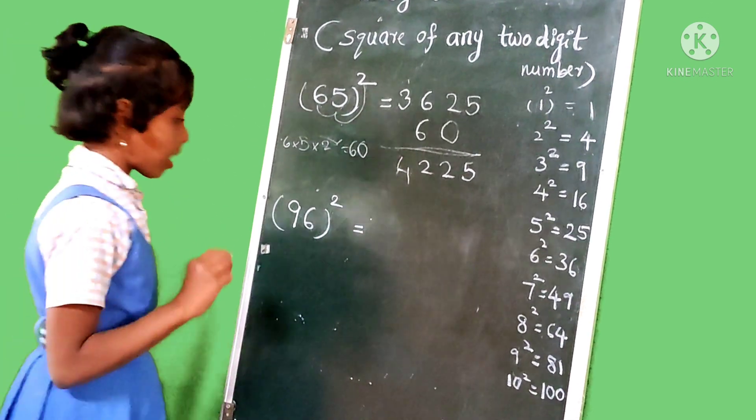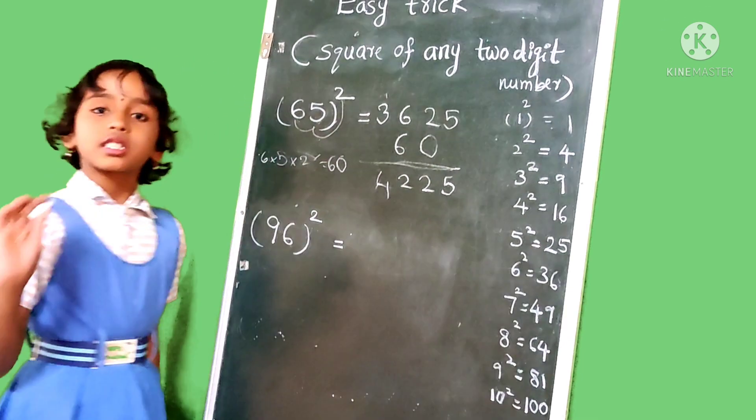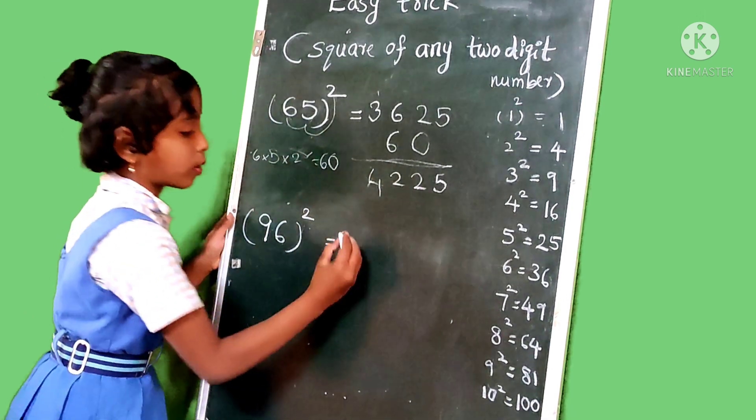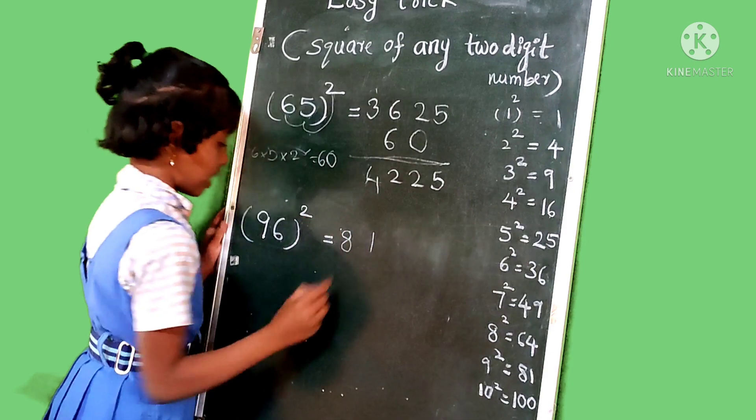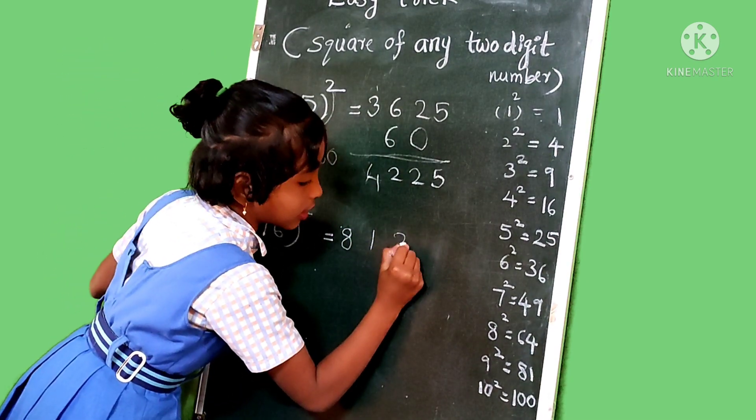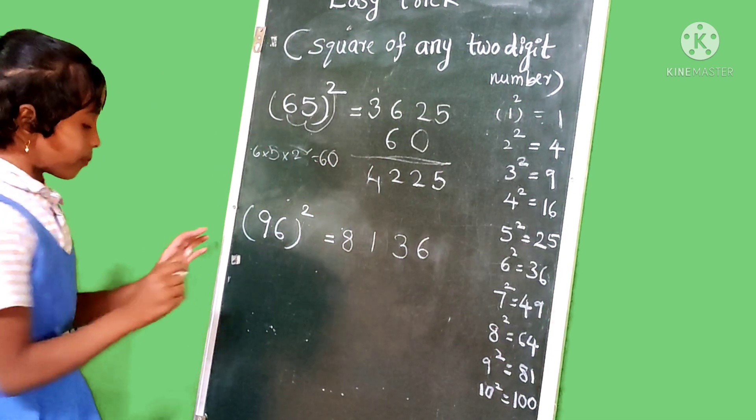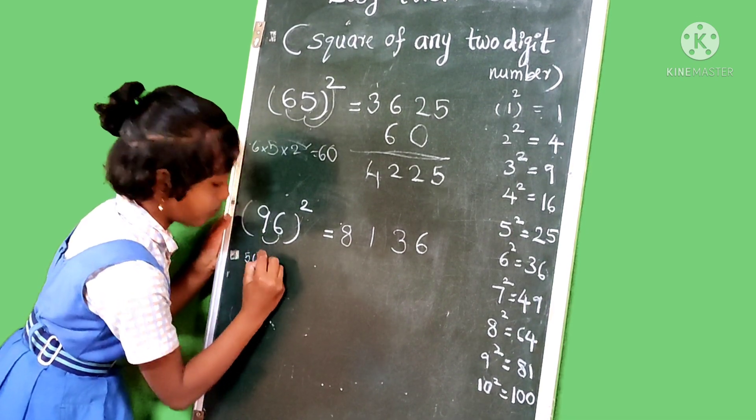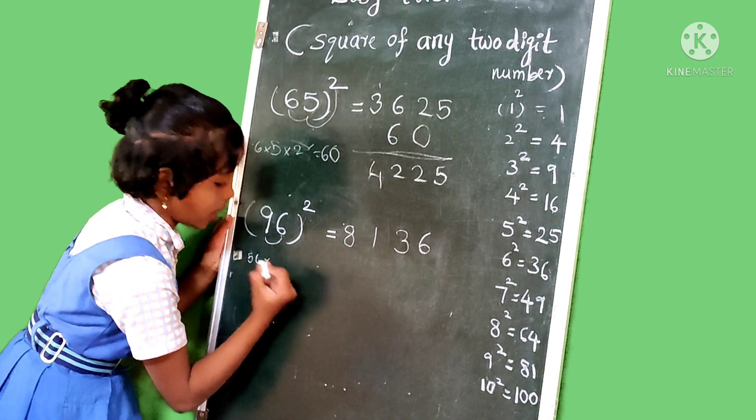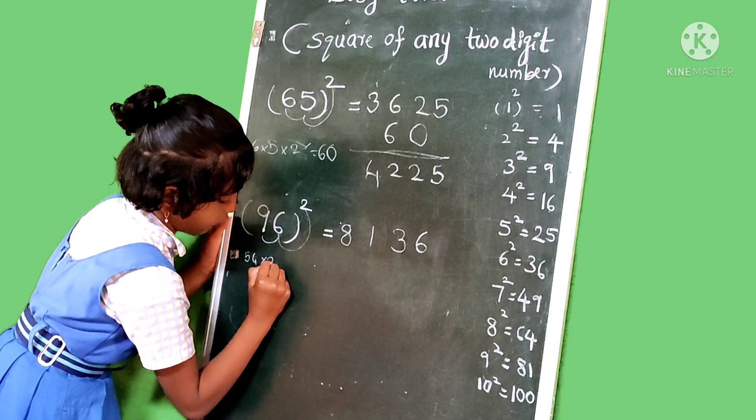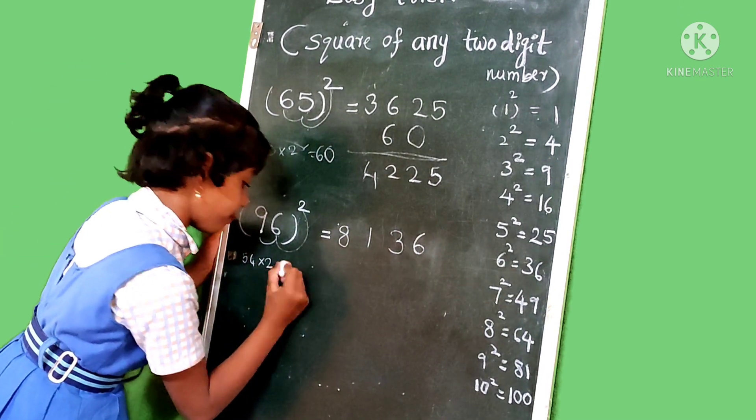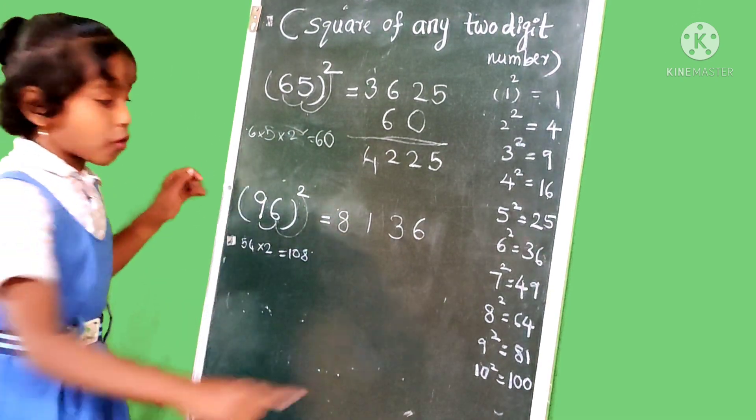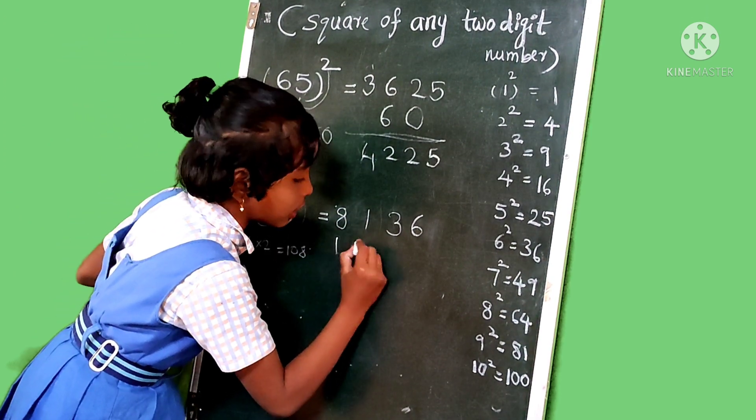And then another example, last example, 96 squared. Then find out the 9 squared. 9 squared is 81. Then 6 squared is 36. Then we multiply 9 and 6, 54. Then it is 54, 54 multiplied with 2, 54 multiplied with 2 is 108. And 108. So we leave units place and we write 108.